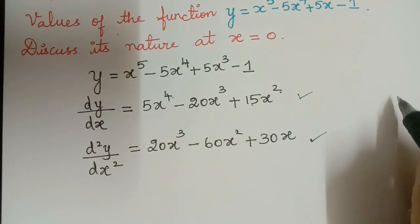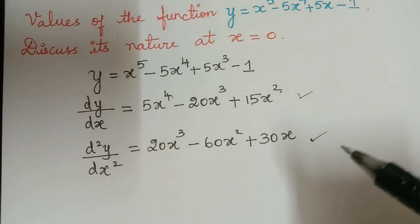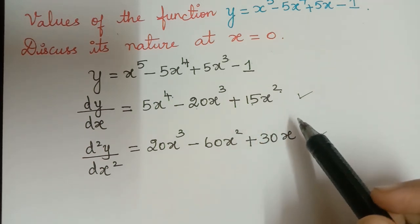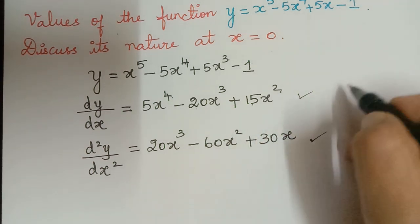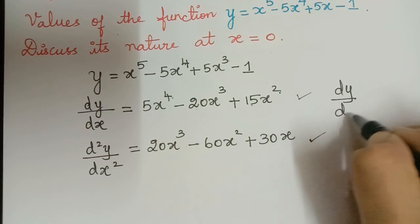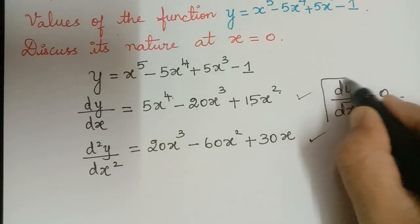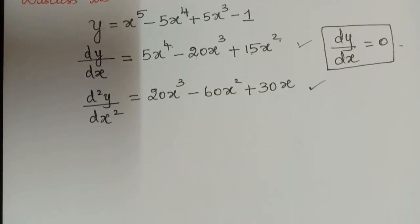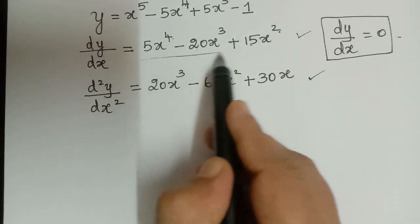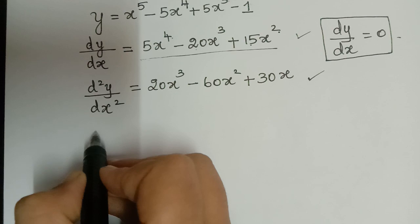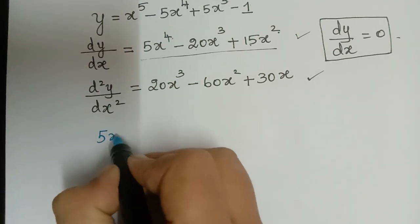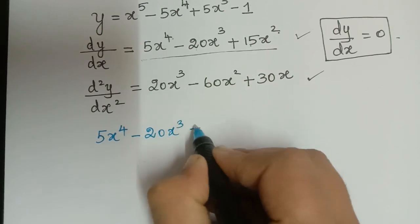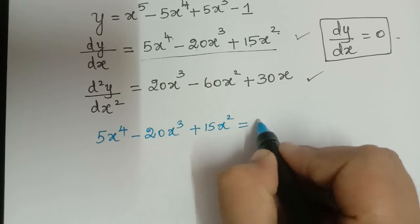Now we have to find the turning points, and at those turning points we check the maxima and minimum values of this function. The turning point is obtained by equating dy/dx to 0. Setting dy/dx = 0 gives us 5x⁴ - 20x³ + 15x² = 0.